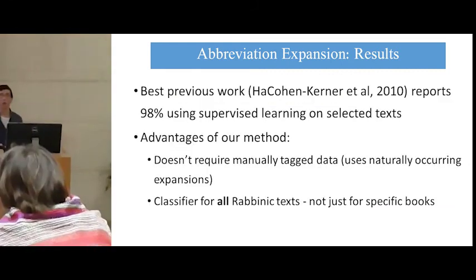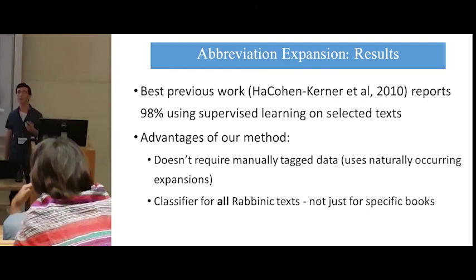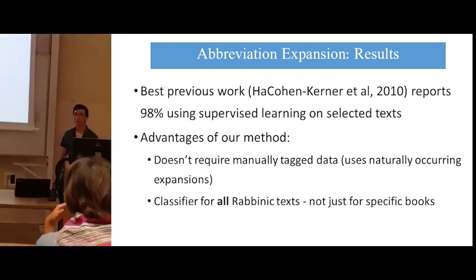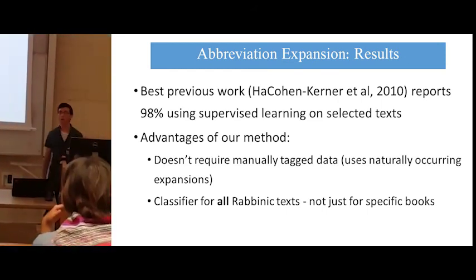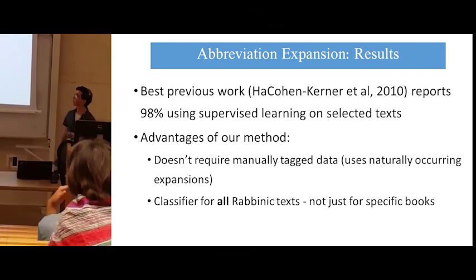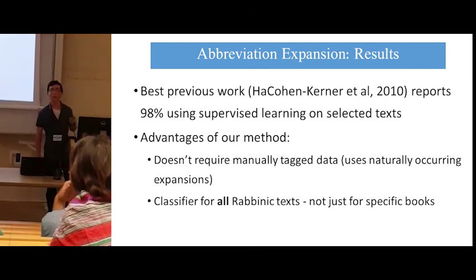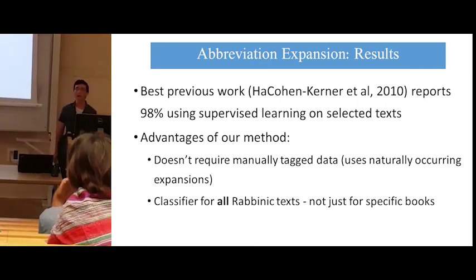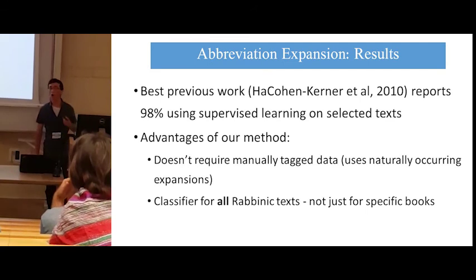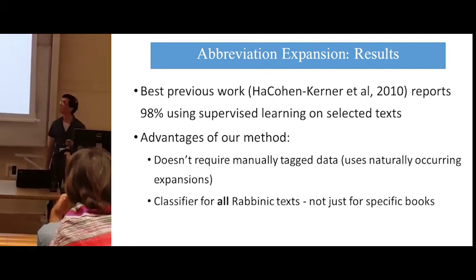The best previous work on this topic reports 98% accuracy using supervised learning on specific books. Our method, on the other hand, does not require any manually tagged data, and the resulting classifier works for all rabbinic text, not just specific books.